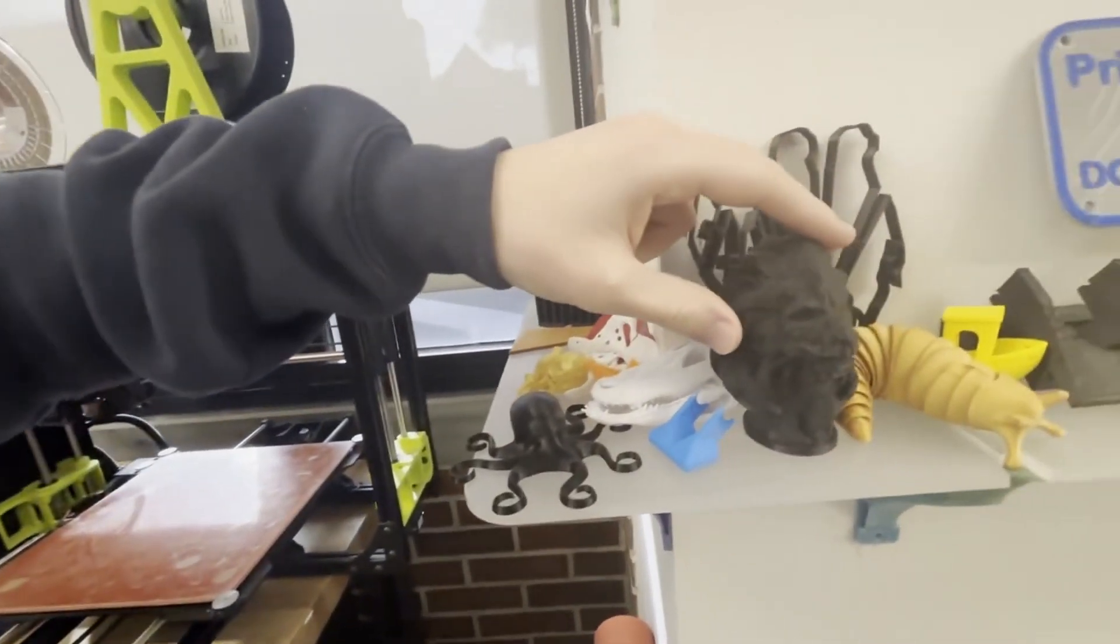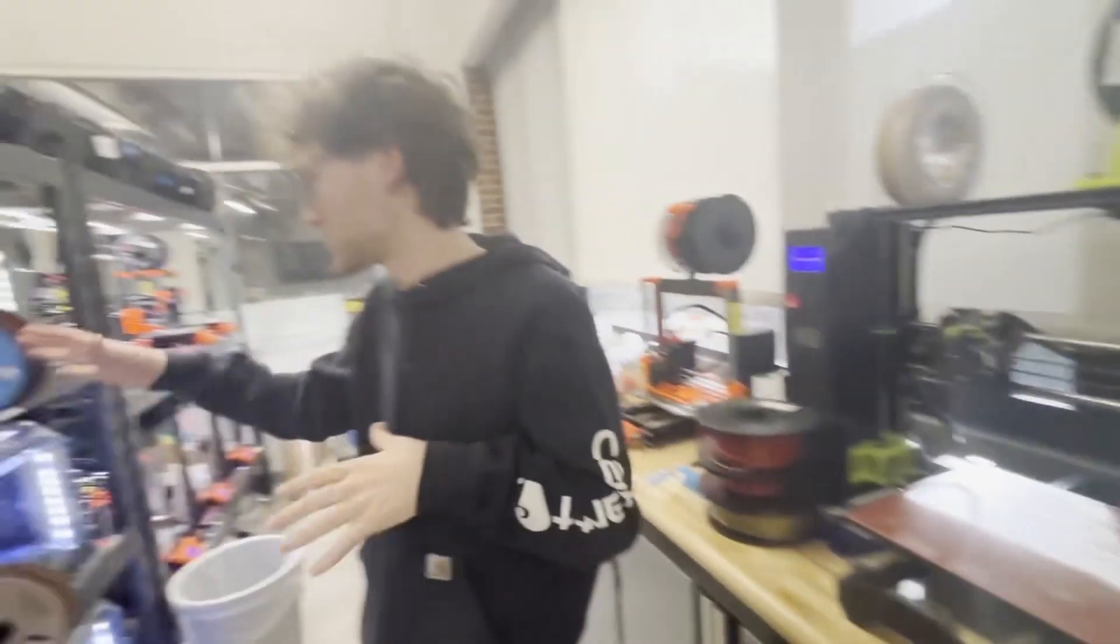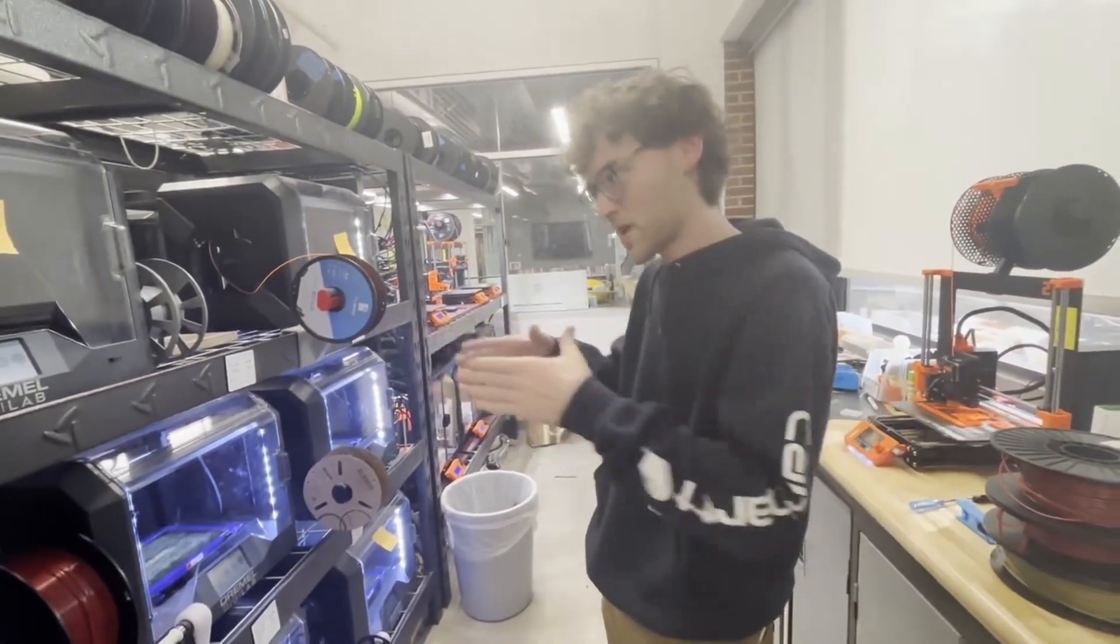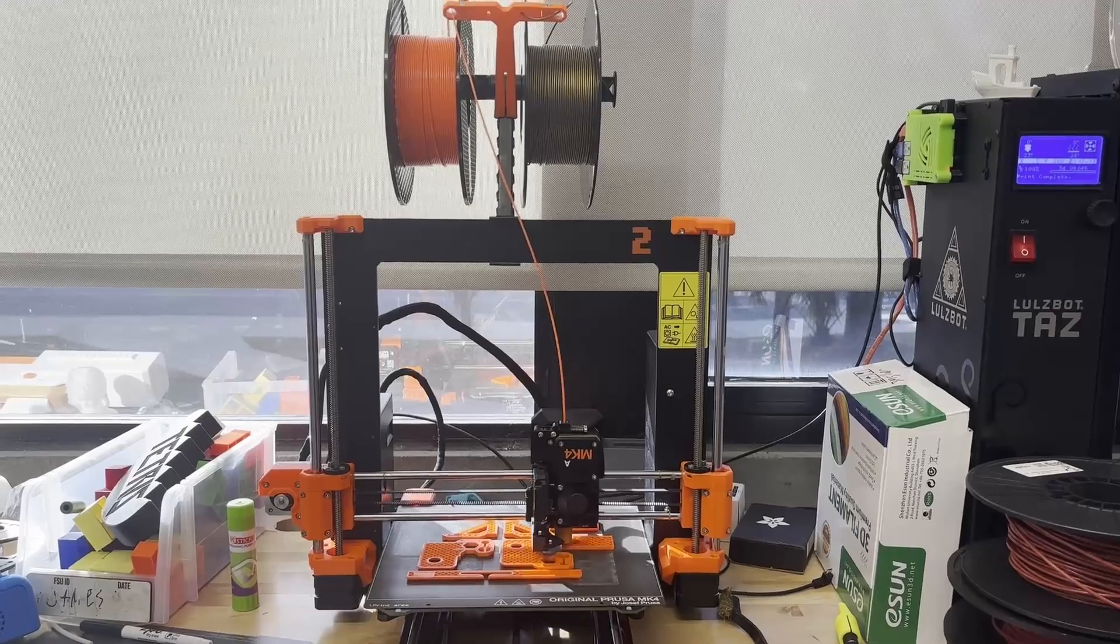There's an octopus, this crazy lion thing. We got a bunch of different types too. Ones that move the bed, ones that move the whole thing, and that's it.